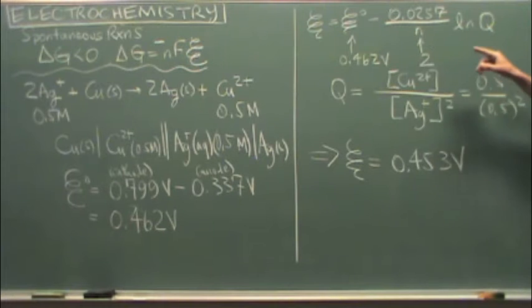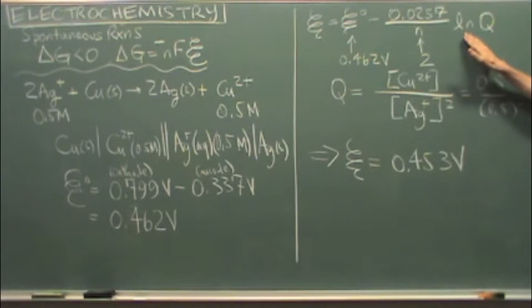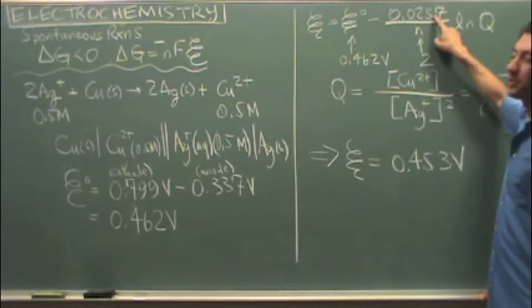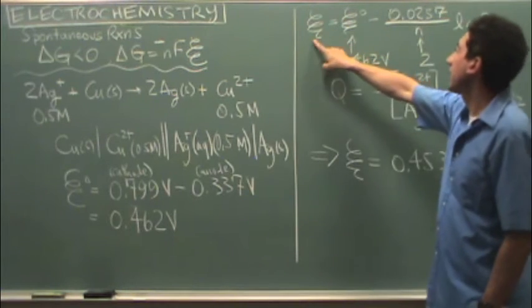You go over here to the Nernst, here's your typical Nernst equation. This is with LN, that's base E. If you use log, L-O-G, that's base 10. So this coefficient will be slightly different. We're going to use the LN version of the formula. They're both the same, doesn't matter which one you use.